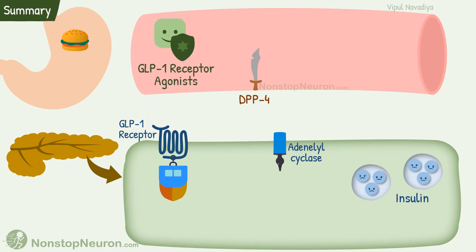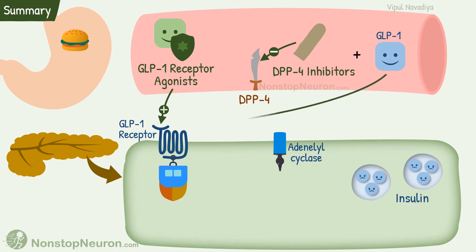Quick summary: GLP-1 receptor agonists are basically GLP-1 analogs resistant to degradation by DPP-4; they directly stimulate the GLP-1 receptor and cause insulin release. DPP-4 inhibitors, on the other hand, prevent degradation of endogenous GLP-1, so the effect of GLP-1 on beta cells is increased and more insulin is released.